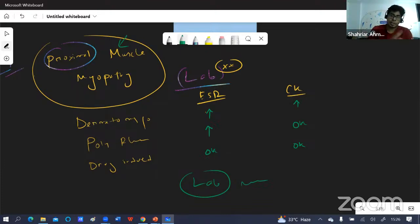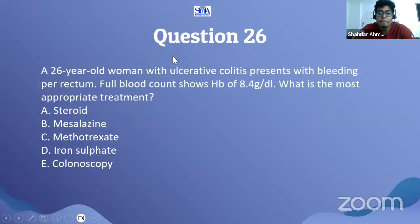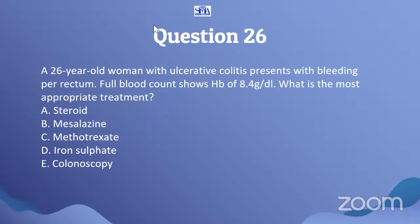Please let me know in the comment section if this information is new or if you already knew it. Moving forward to the next question: a 26-year-old with ulcerative colitis presents with bleeding per rectum. Full blood count shows hemoglobin 8.4 g/dL. What is the most appropriate treatment?